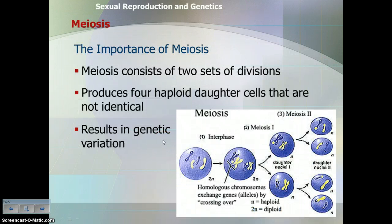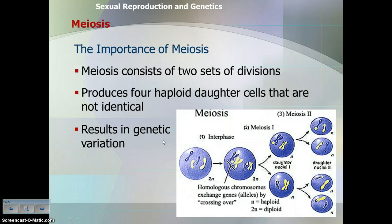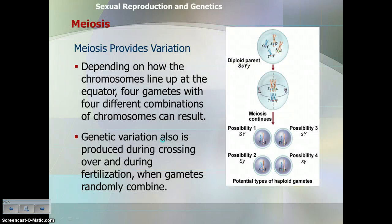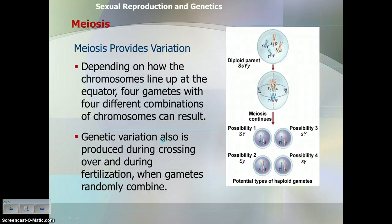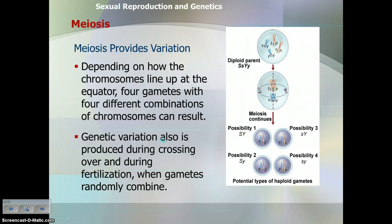To summarize: meiosis consists of two sets of divisions. The DNA is replicated once and the cell divides twice, producing four haploid daughter cells that are not genetically identical to the parent. Crossing over increases genetic variation. Depending on how chromosomes line up at the equator, the four gametes have different chromosome combinations. So there are actually three ways genetic variation occurs: crossing over, the order in which chromosomes line up at the equator, and which gametes ultimately combine — for example, which egg combines with which sperm.